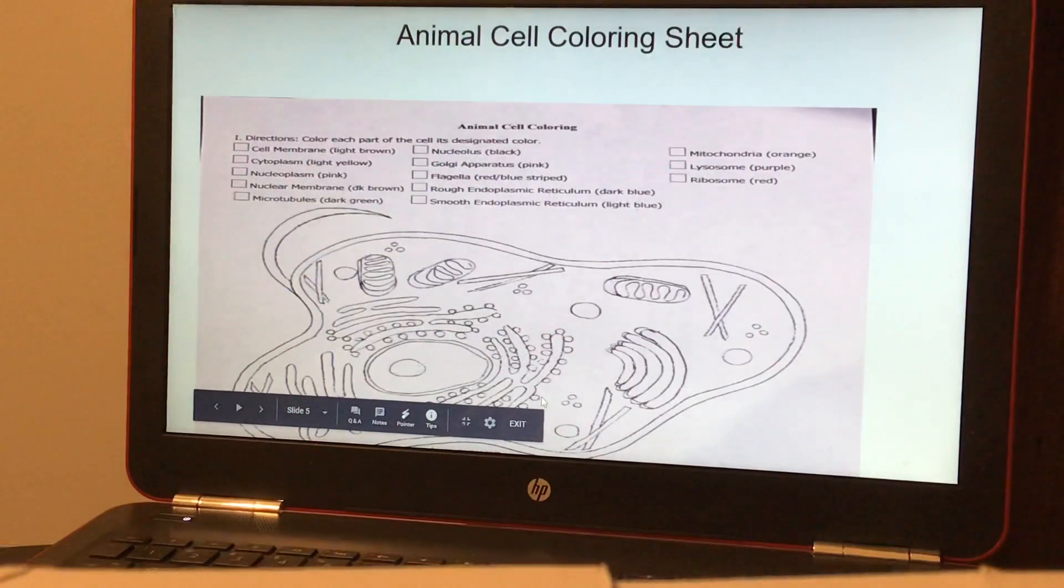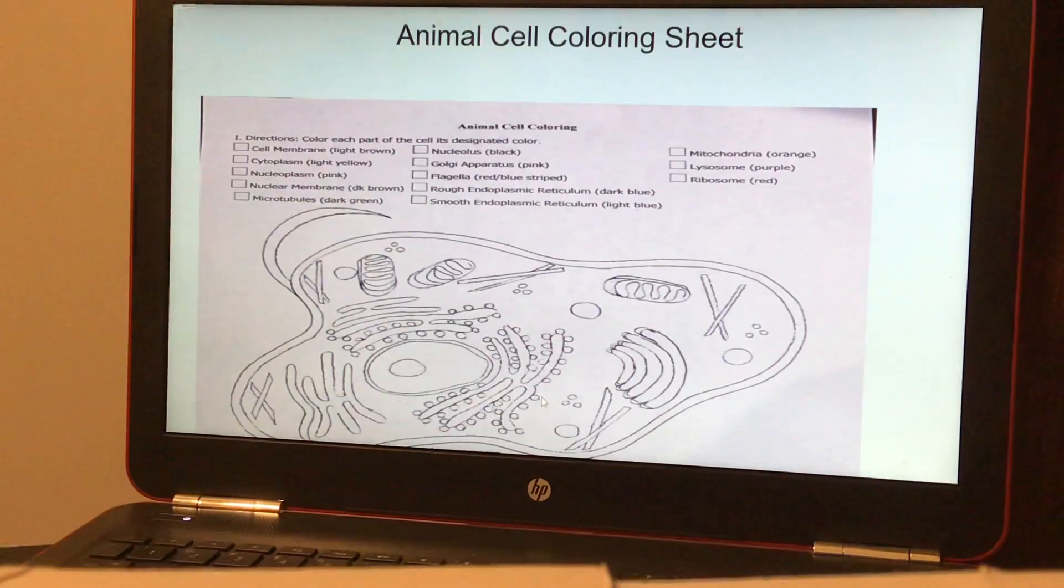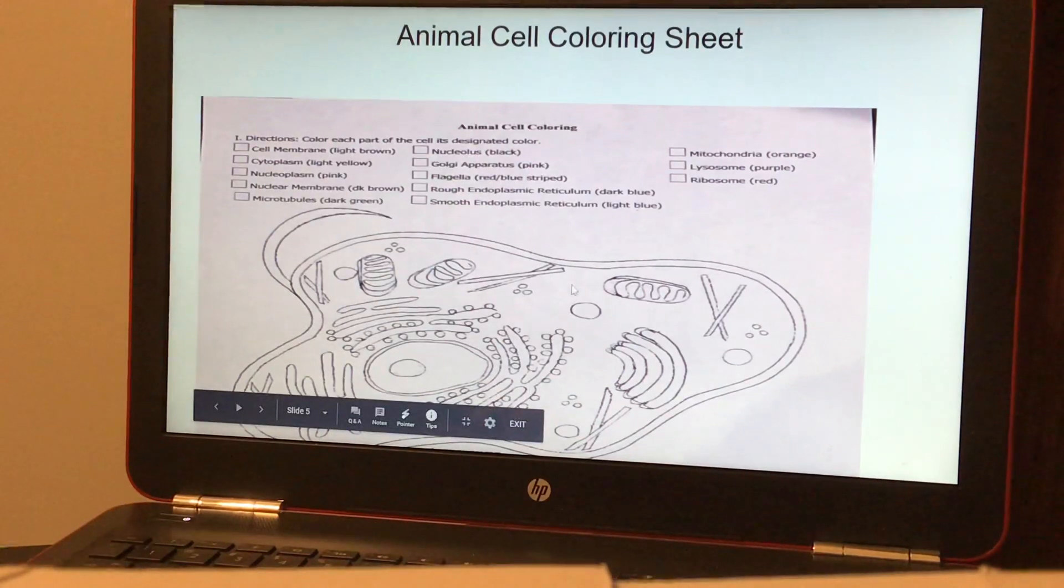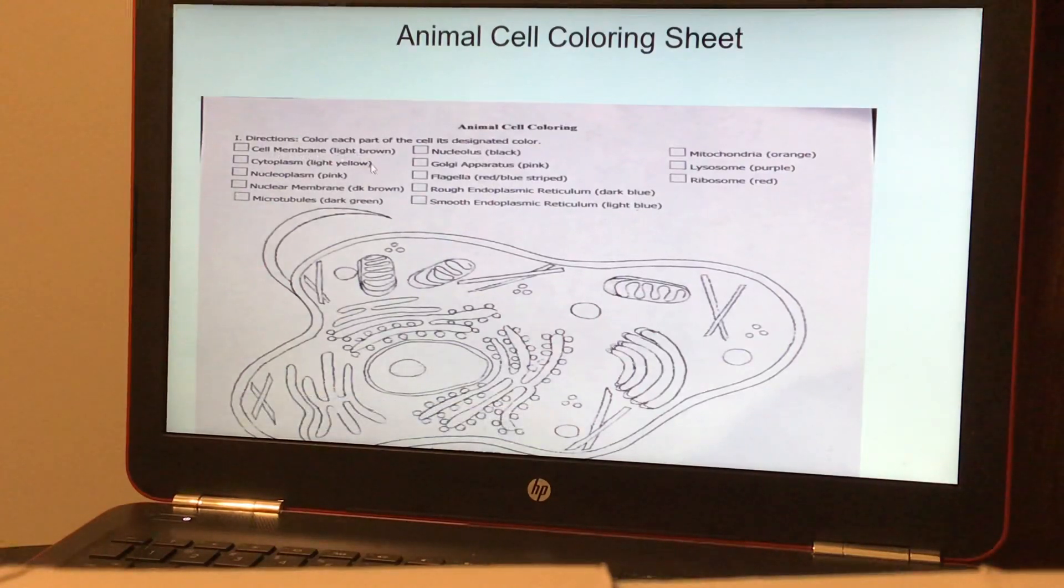I gave you a copy of what I would normally give you in person, but since we're not in person, I still gave it to you anyways. This is a black and white picture of an animal cell. It's a coloring sheet, and it tells you to color each part of the cell different colors, like cell membrane light brown, cytoplasm light yellow. So you get the idea.